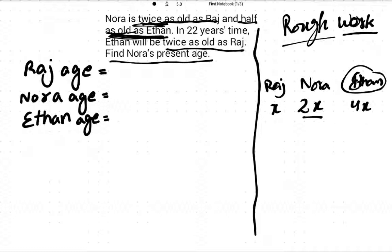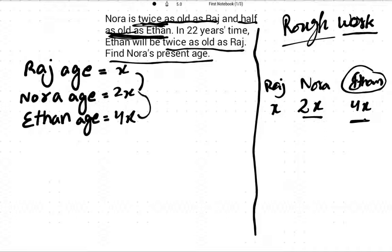So this is basically the tricky part. Now the question becomes simple: Raj is x, Noora is 2x, and Athan is 4x. Noora is twice Raj's age, and half of Athan's age.